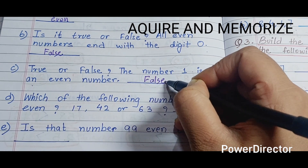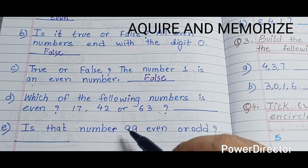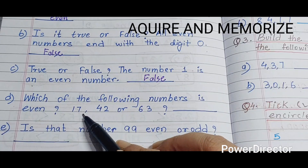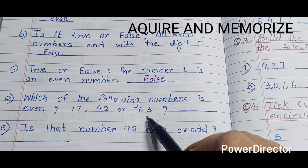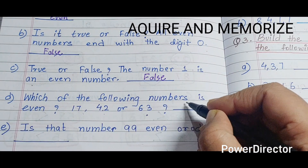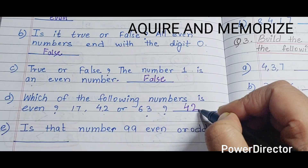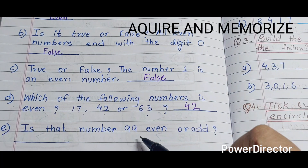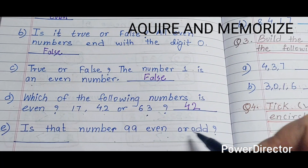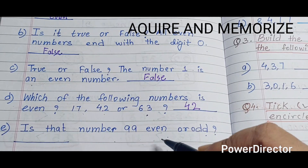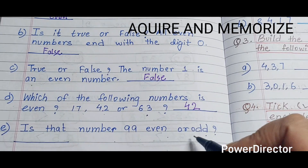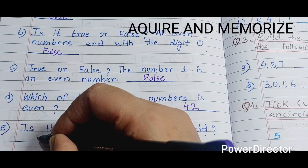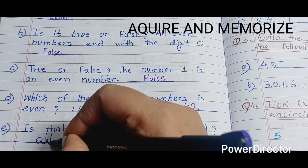Next: which of the following numbers is even — 17, 42, or 63? The answer is 42, so we will write 42. Next: is the number 99 even or odd? The number 99 is an odd number.